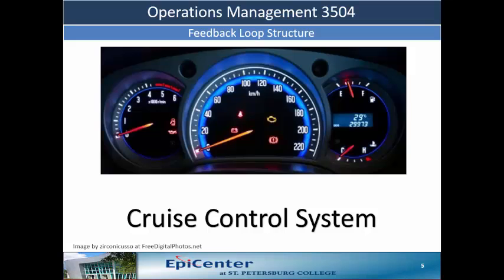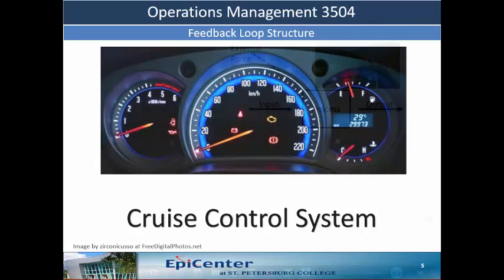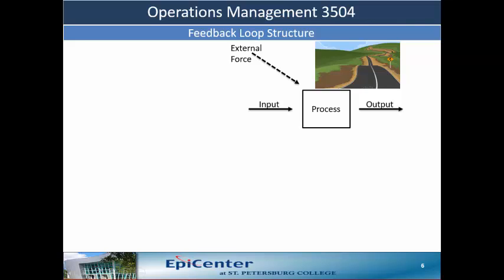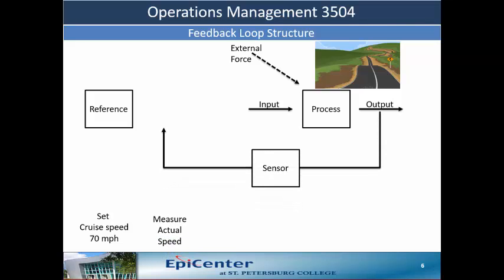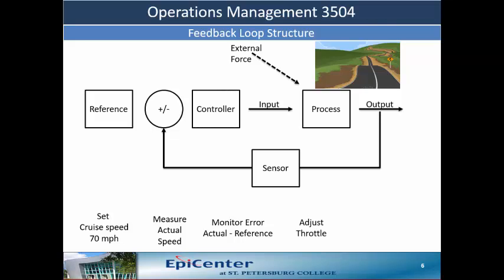Let's go back to our car and introduce a cruise control system. We have just seen the effect of an external force on our car. With a cruise control system, we can set the cruise speed at 70 miles per hour — let's call that our reference point. Next, we need a sensor that will measure the actual speed. The actual speed then becomes an input to a monitor which calculates the difference between actual and reference speeds. A controller finally adjusts the throttle, which updates the input to the system.